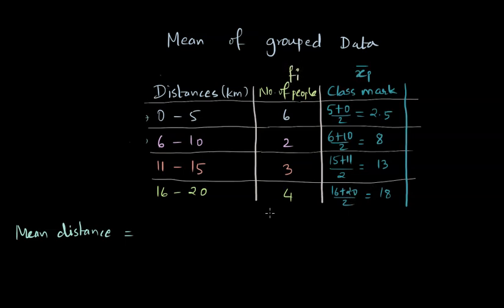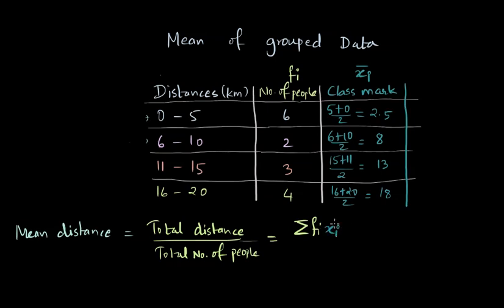And now to calculate the mean distance, we need to find the total distance that all these people walked divided by total number of people. The total distance can be calculated by multiplying the number of people walking that particular mean distance in each group. So that is summation of Fi and Xi bar divided by summation of Fi, and summation of Fi is nothing but total number of people.